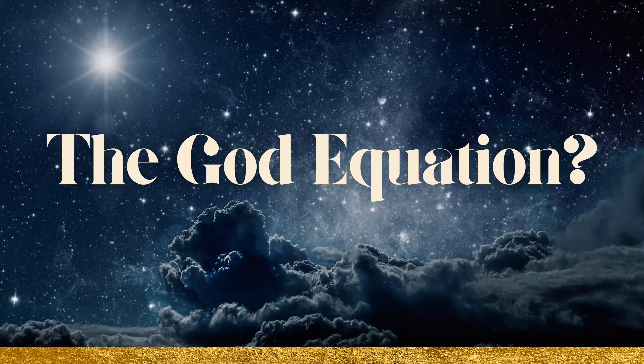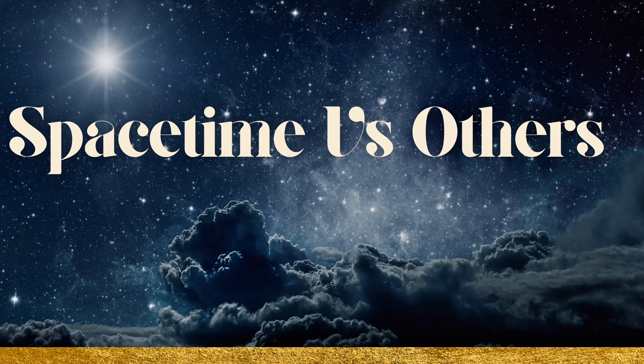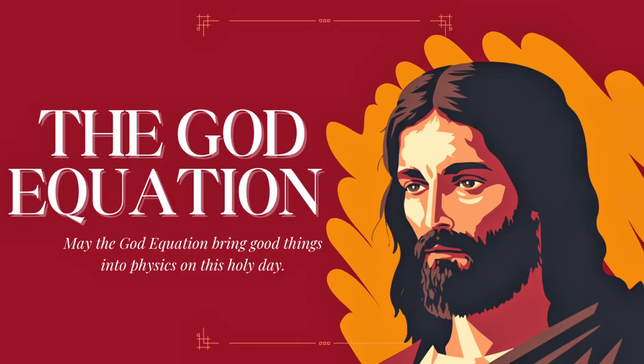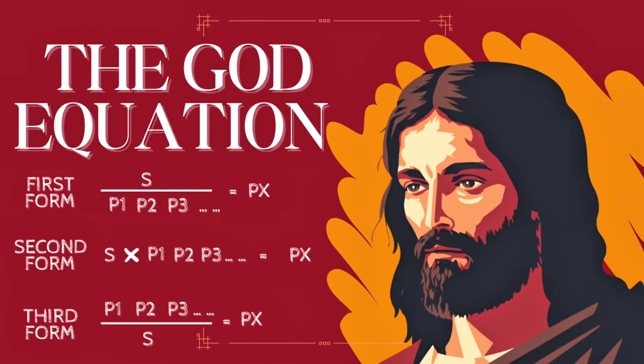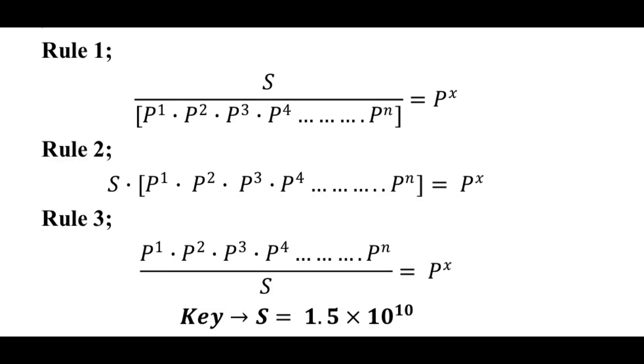Hence, explaining our universe requires an equation whereby it is space-time versus the other entities. This is the explanation behind the God equation formation, which is space-time over the entries to give a result, space-time times the entries to give a result, and the entries over space-time to give a result. These are the three forms of the God equation, also known as the ultimate physics equation.